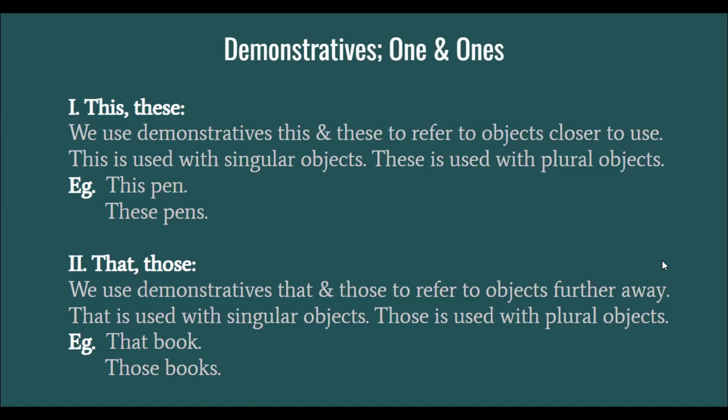Next we have 'that' and 'those'. That and those are used to point out far away objects — something that is not near us. We use 'that' with a singular object and 'those' with plural objects. So: that book and those books.